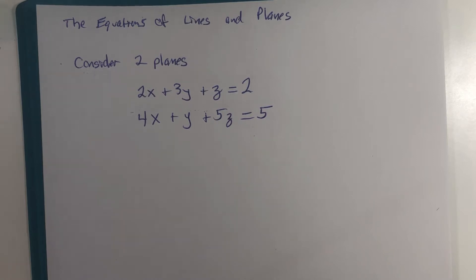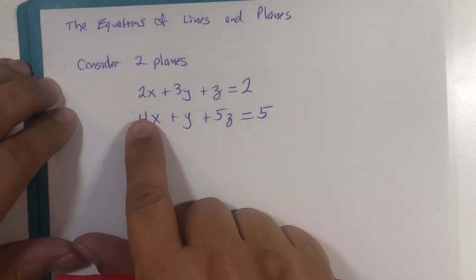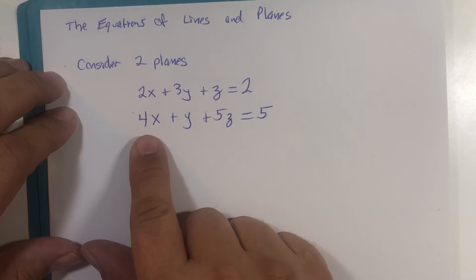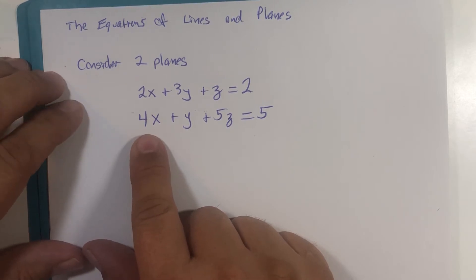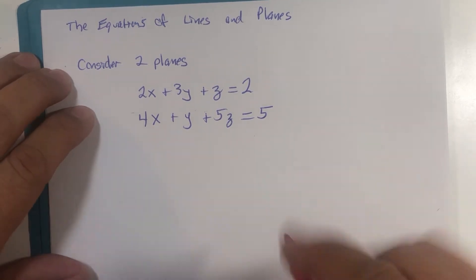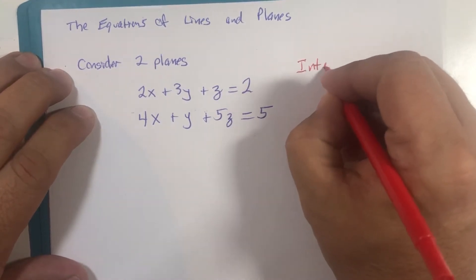We're going to look at a problem that involves both lines and planes. What I have provided here are two planes whose equations have been given. It wouldn't be too difficult to sketch these using the triangle method previously demonstrated, but what we're going to investigate is what is happening where these two planes intersect.